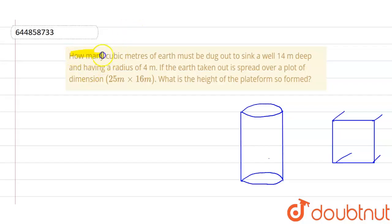The question given to us was: How many cubic meters of earth must be dug out to sink a well 14 meter deep and having a radius of 4 meter? If the earth taken out is spread over a plot of dimension 25 meter multiplied by 16 meter, what is the height of the platform so formed?